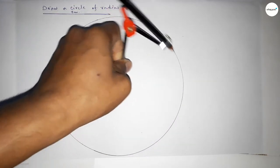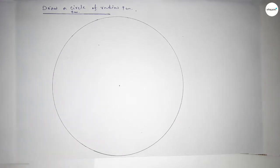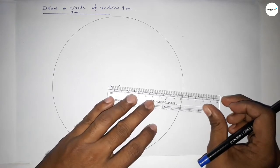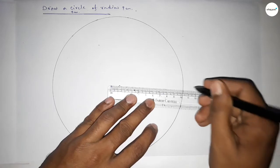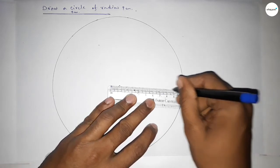Now we have to join the radius of this circle. So now we have to join this line and this is the radius of this circle.